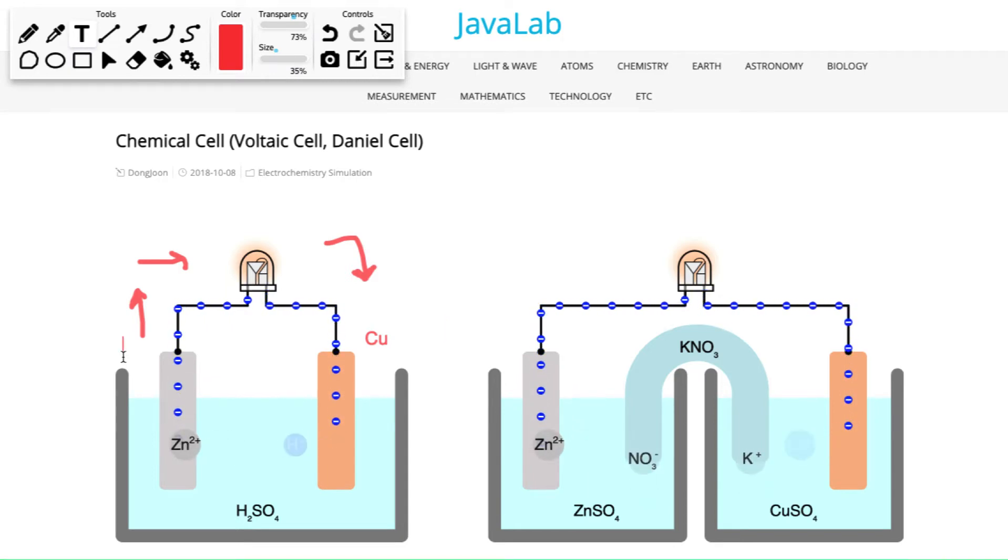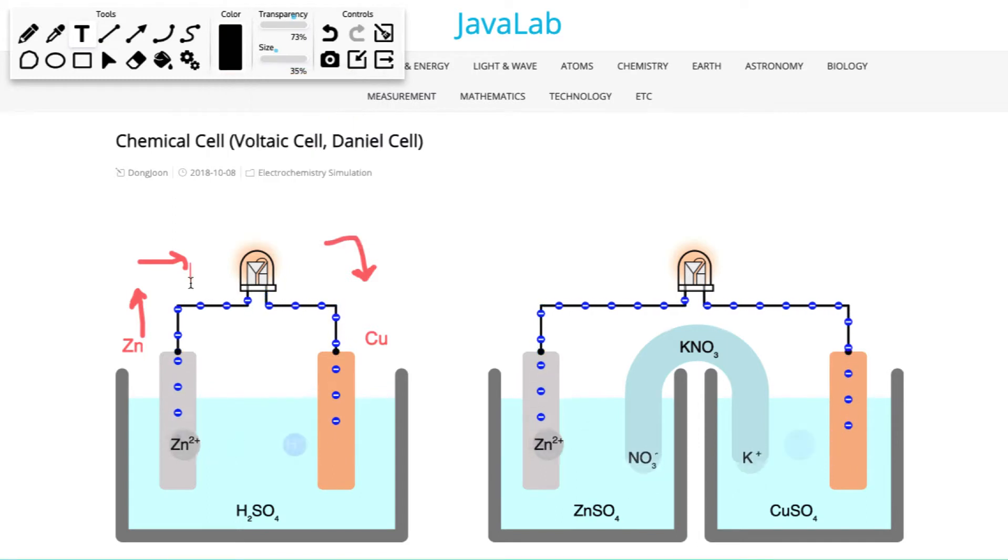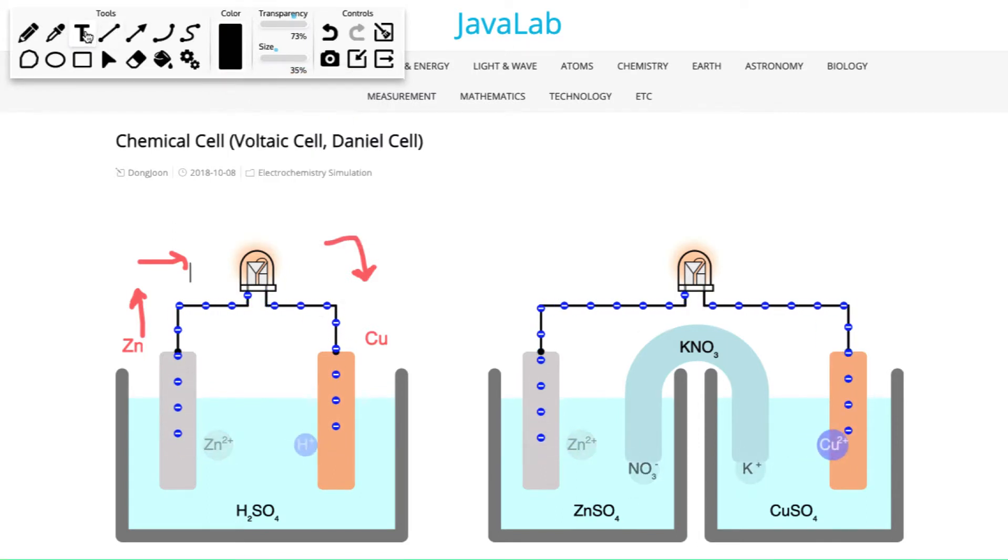Now this means that since I have my flow of electrons kind of mapped out I can think about which side is showing the oxidation and which side is showing the reduction. So if electrons are leaving zinc that means that oxidation would be occurring over at zinc, right? Oxidation, oil rig, oxidation is losing. So this is oxidation. And we've got oil rig as our first memory trick. We also have red cat and anox. So this would also be the anode is where my oxidation is taking place.